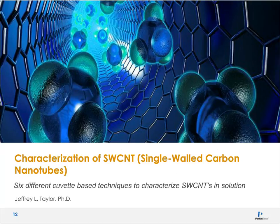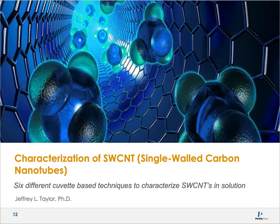Thank you very much, Chaddy, and good day to everybody. We're going to start by looking at analysis techniques for single-walled carbon nanotubes. These are probably the simplest types of assays you can do on nanomaterials — basically putting carbon nanotubes suspended in solution in a cuvette and running an absorption spectrum. Nanomaterials do two things very well: they absorb light and they scatter light. How they absorb and scatter depends on the size, shape, and environment of the nanotube or nanoparticle.